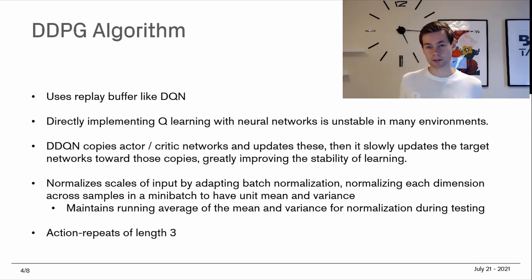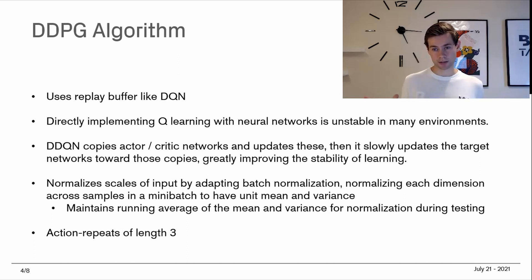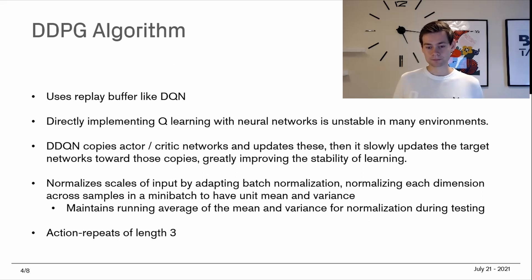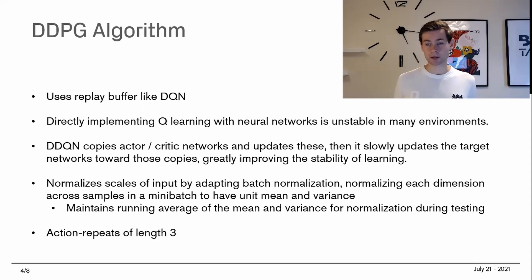The last point is that they used action repeats of length three. Since they're training off a simulated environment, they skip three frames at a time and use the same action for those three — they pick an action and use it three times in a row, jumping forward three time steps. This allows training on three times as much data, since stepping the simulator forward three steps requires no extra computational resources, but re-evaluating the action would. This provides a trade-off between decision frequency and training data volume.